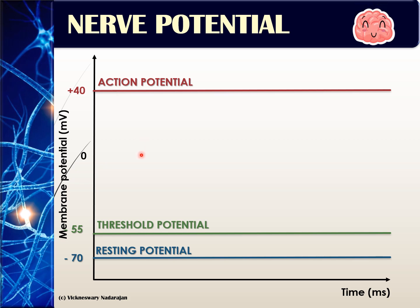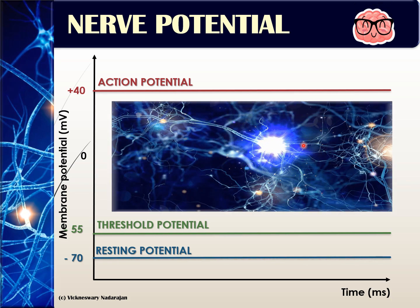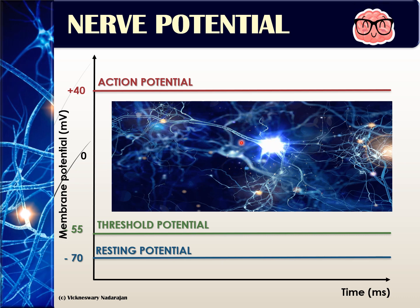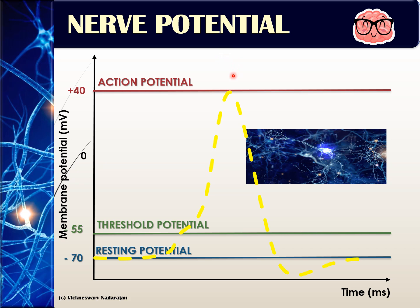For example, when you are asleep, most of your nerves will not be transmitting an impulse. If I measure the electrical value of the axon at that time, I will find it at the resting potential of negative 70 millivolts. But if the nerve is transmitting an impulse, measuring the electrical change in the axon will show the graph increasing up to the action potential.